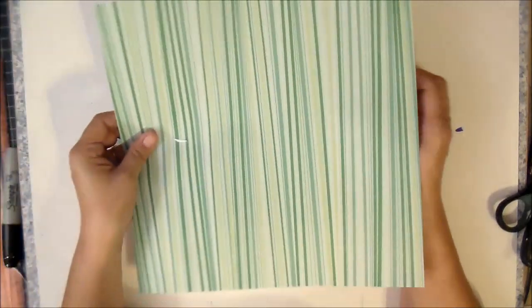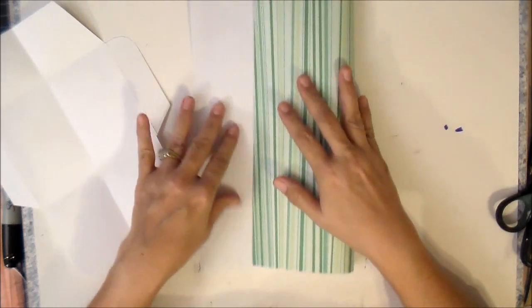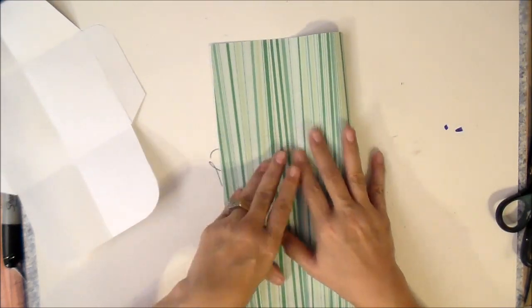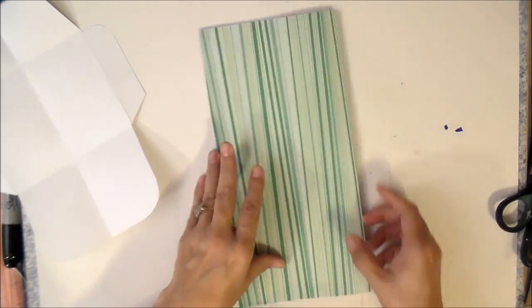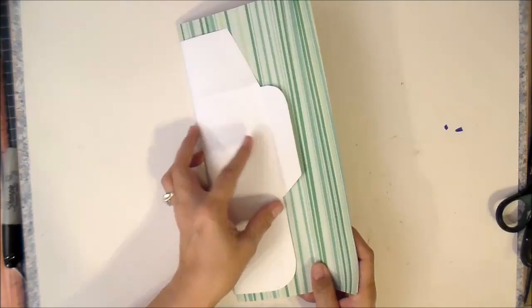Let's say that you want to use a twelve by twelve sheet of paper to make your envelope. Fold this baby in half like this. Stick this into your template like that.